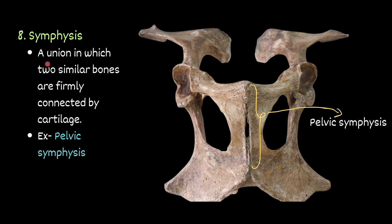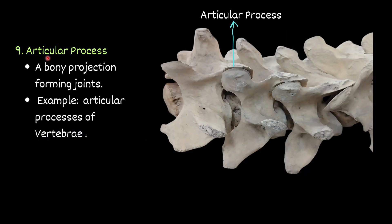Symphysis — a union in which two similar bones are firmly connected by a piece of cartilage. For example, pelvic symphysis — you can see this is the pelvic symphysis. Then articular process — a bony projection forming a joint. For example, articular processes of vertebra. You can see these are the articular processes; this one and this one together form the joint.